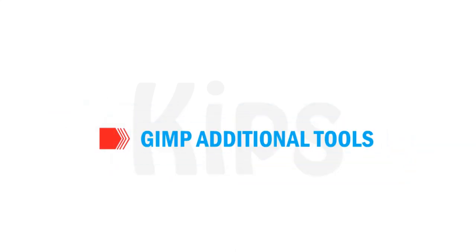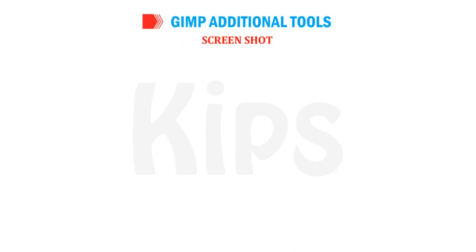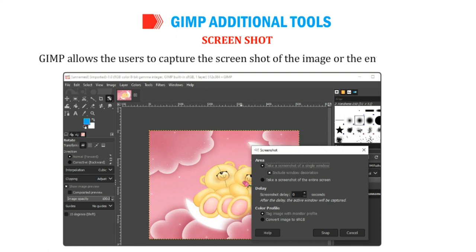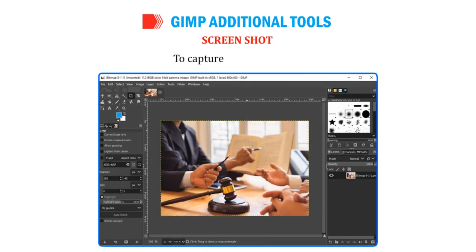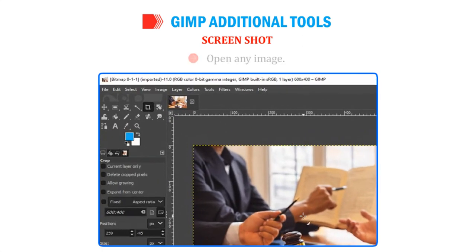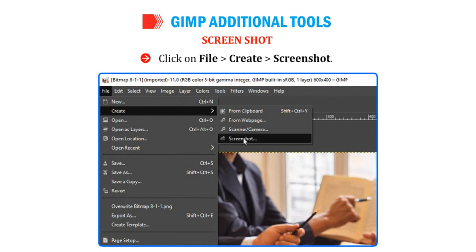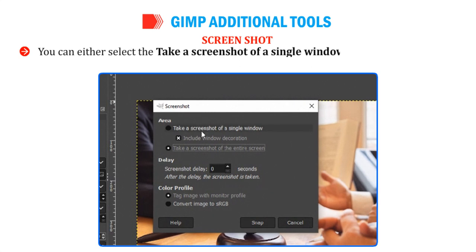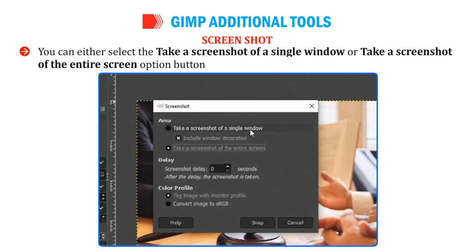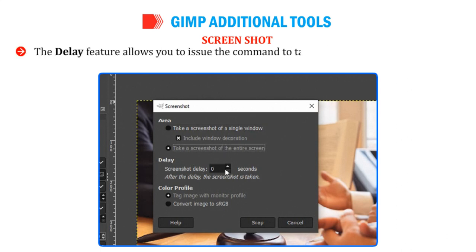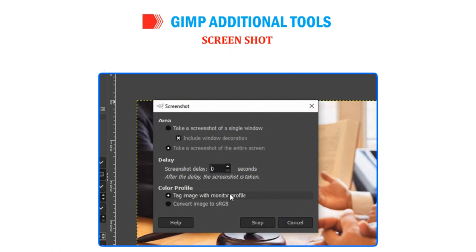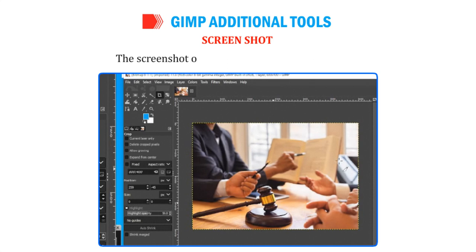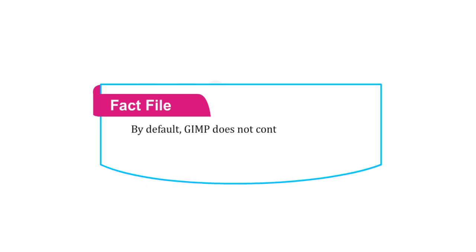Let us discuss about GIMP additional tools. GIMP allows the users to capture the screenshot of the image or the entire window. Open any image. Click on File then Create then Screenshot. The screenshot dialog box appears. You can either select the take a screenshot of a single window or take a screenshot of the entire screen option. The delay feature allows you to issue the command to take a screenshot after an interval that you specify. Click on the Snap button. The screenshot of the image appears on the screen. By default, GIMP does not contain any image; you can either create a new image or open a saved image.